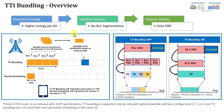As a side note, TTI bundling is primarily supported by FDD. It can be supported by TDD only in very specific cases depending on the subframe configuration. Typically, subframe assignment 2 (SA2) is used, which has a configuration of 6 downlink, 2 uplink, and 2 special subframes. TTI bundling requires 4 consecutive uplink TTIs, so it is only supported by configurations 0, 1, and 6. It also does not work with semi-persistent scheduling.